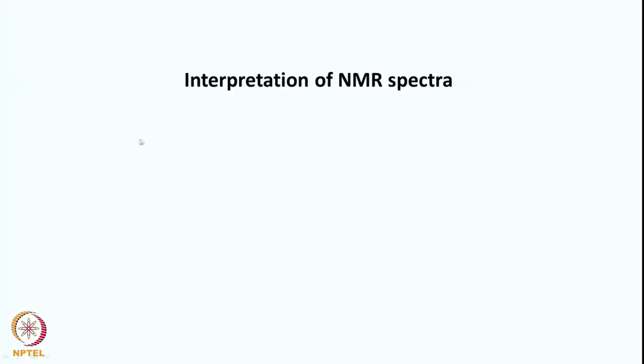Welcome to today's class. We will be continuing with high resolution NMR spectrum of molecules. Using the concepts of coupling constant and chemical shift, we can start interpreting NMR spectra of a few molecules, and these can be used for distinguishing isomers. Let us take an example.